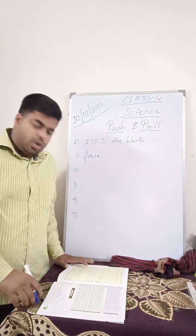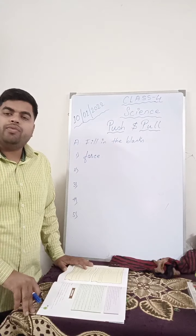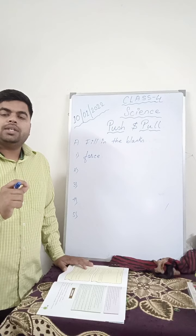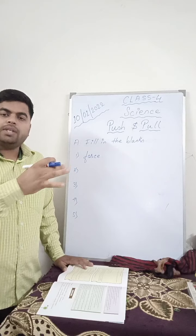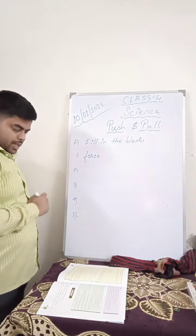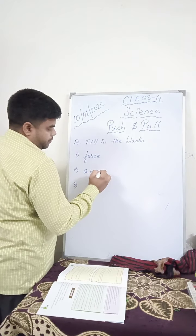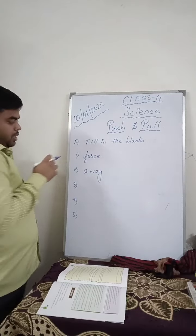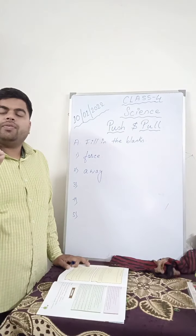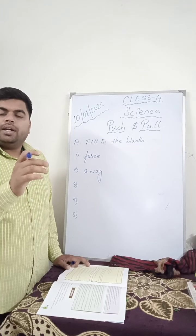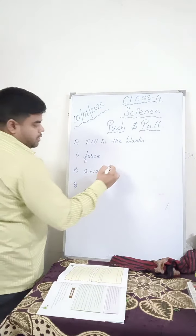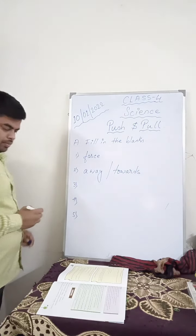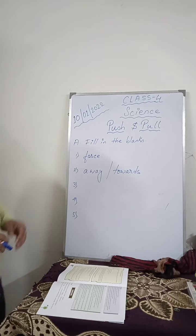Number 2. Pushing makes the object move dash from or to us. That means when you push an object, it will move away from us. Or if you write away, then away from us, and if you push, it will be towards. Away.